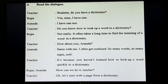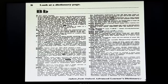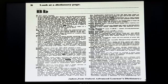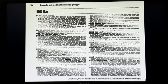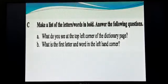Now we will go to page 12 and look at a dictionary page. They have given you a dictionary page showing how the dictionary page looks and how you will find words. The words start with B — they have given you some words which start with B or 'ba'. This page is taken from the Oxford Advanced Learner's Dictionary.